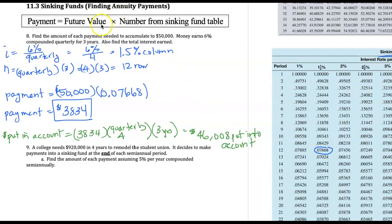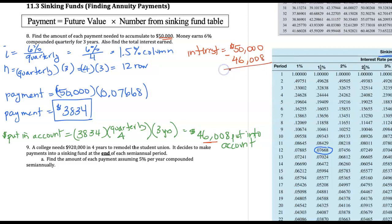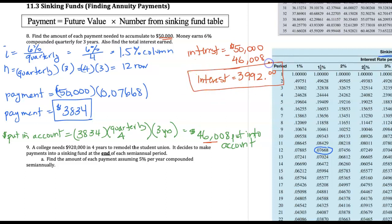To calculate the interest, it's the difference between the money that's put in and the money that comes out. It's going to be the fifty thousand dollar goal minus the forty-six thousand eight dollars that was invested. Subtracting, we get a total of three thousand nine hundred ninety-two dollars in interest. Let's take a look at the next question.